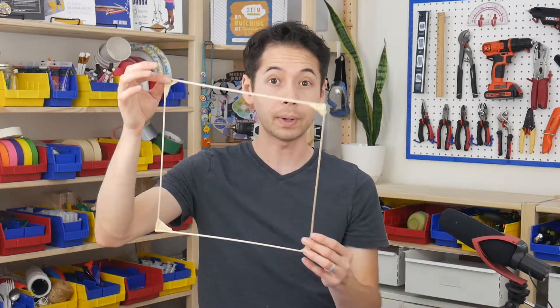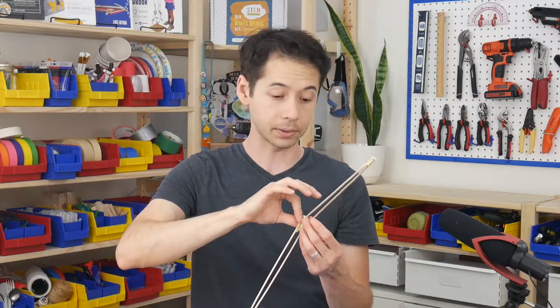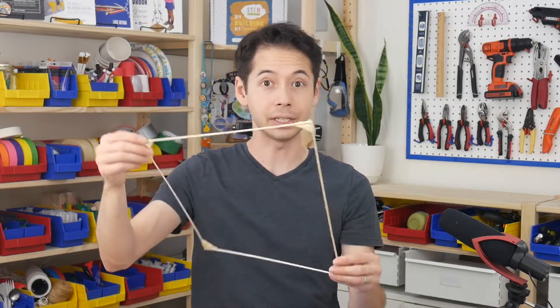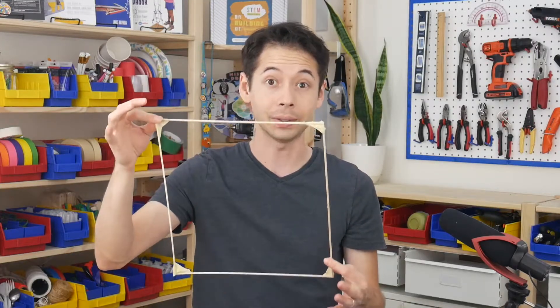By contrast, here's a square that I built using the same techniques. Just applying a little bit of force causes the whole thing to collapse. This is because the square can change its shape really easily, and that force is not being distributed evenly throughout the whole shape.